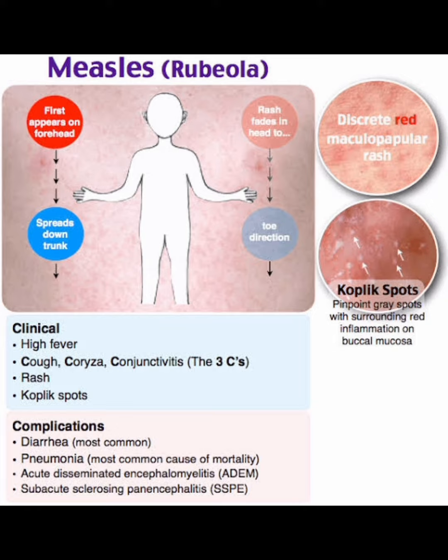The clinical features of measles include high fever, cough, coryza, and conjunctivitis. Remember the easy mnemonic — the 3 C's: cough, coryza, and conjunctivitis. Rash and Koplik spots also develop.